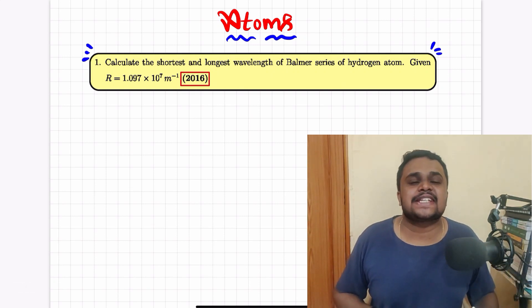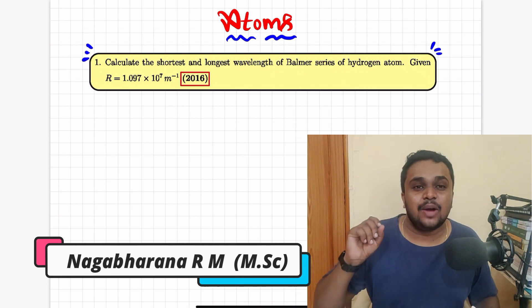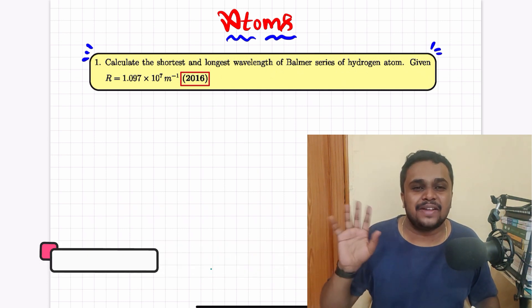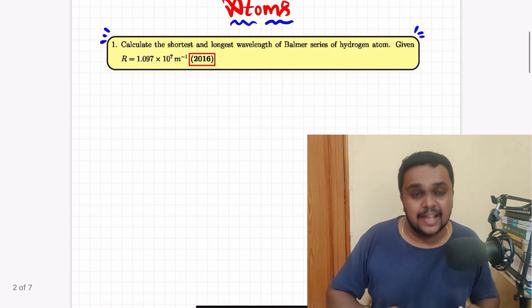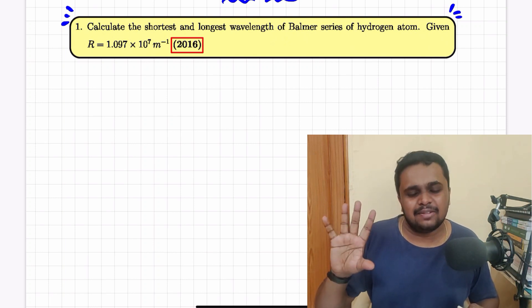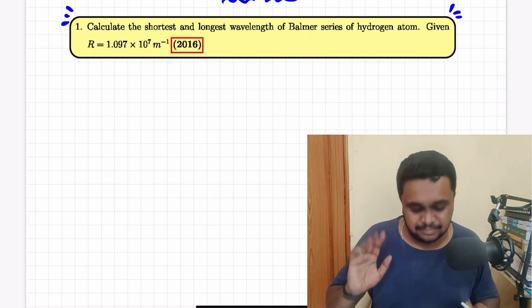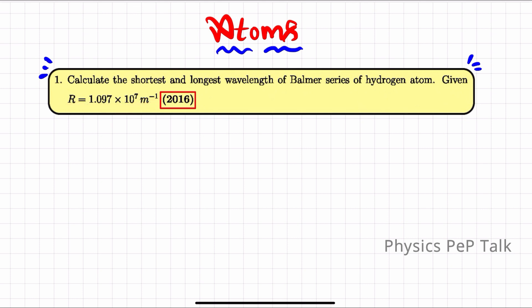Hello students and welcome to Physics Pep Talk. In this video we are going to talk about atoms — problems from the previous years 2016 and 2017, and we are going to solve them all. So let's get into the problem. Calculate the shortest and longest wavelength of the Balmer series of the hydrogen atom. Given Rydberg constant R = 1.097 × 10⁷ m⁻¹. This question was asked in 2016.